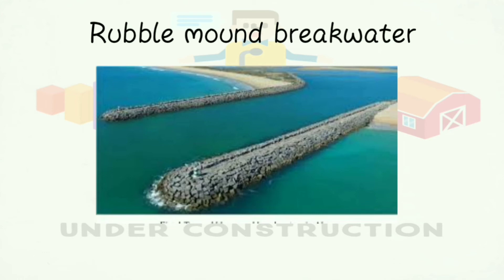Advantages of rubble mound breakwater (RMBW): use of natural materials, reduced material cost, use of small construction equipment, less environmental impact, and it is easy to construct. A failure is mainly due to poor interlocking capacity between individual blocks. It is also a disadvantage that larger-size natural rocks are unavailable, which leads to the use of artificial armor blocks.